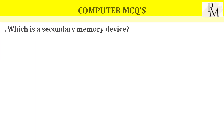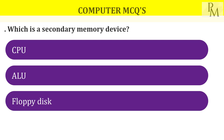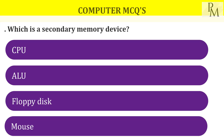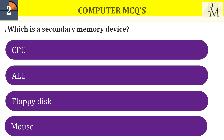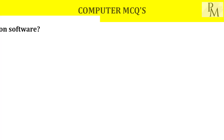Which is a secondary memory device? Secondary memory is a device which can be attached to hardware. The options are CPU, ALU, floppy disk, and mouse. The floppy disk is an external device and is the secondary memory — CPU and ALU are not included.